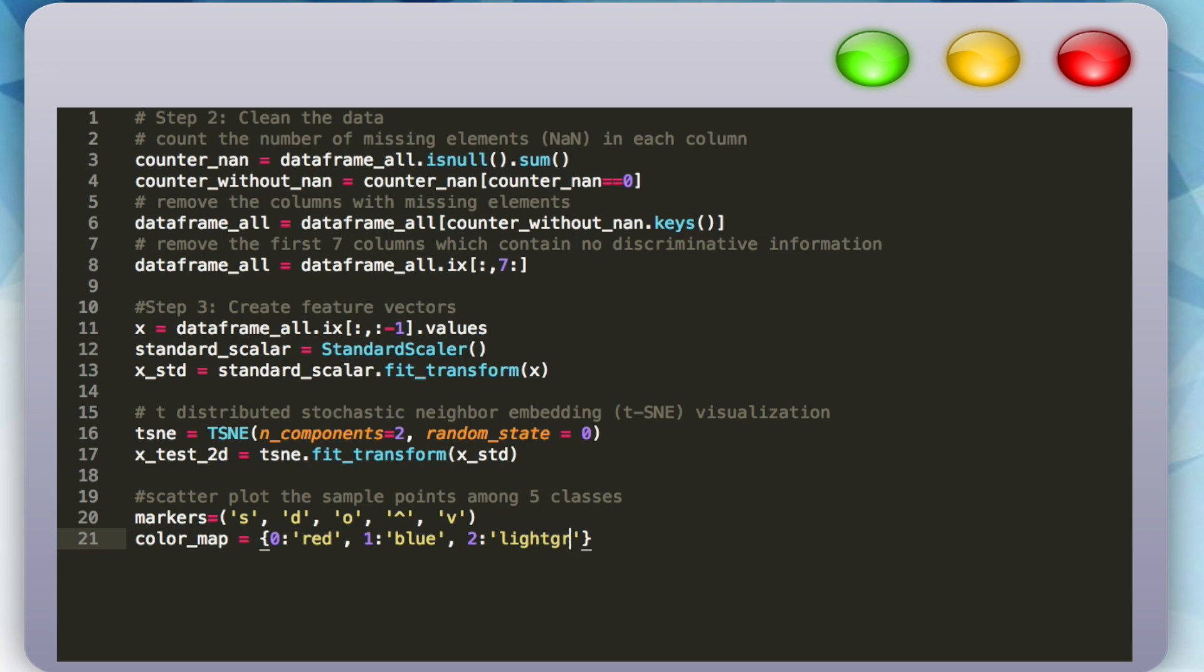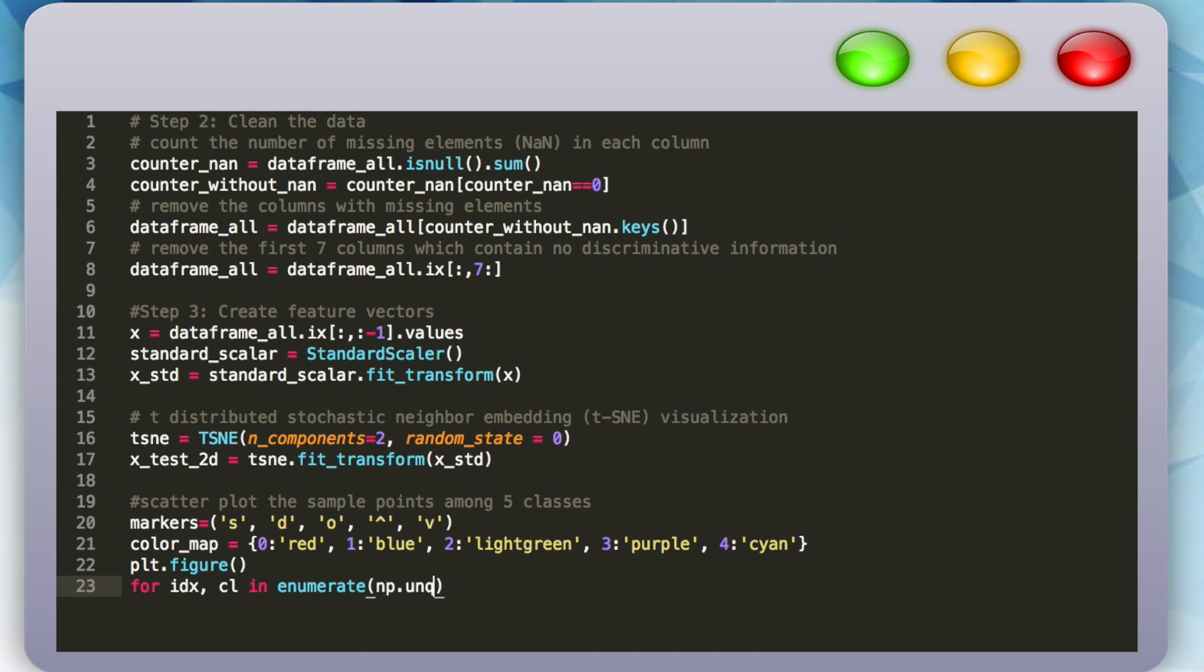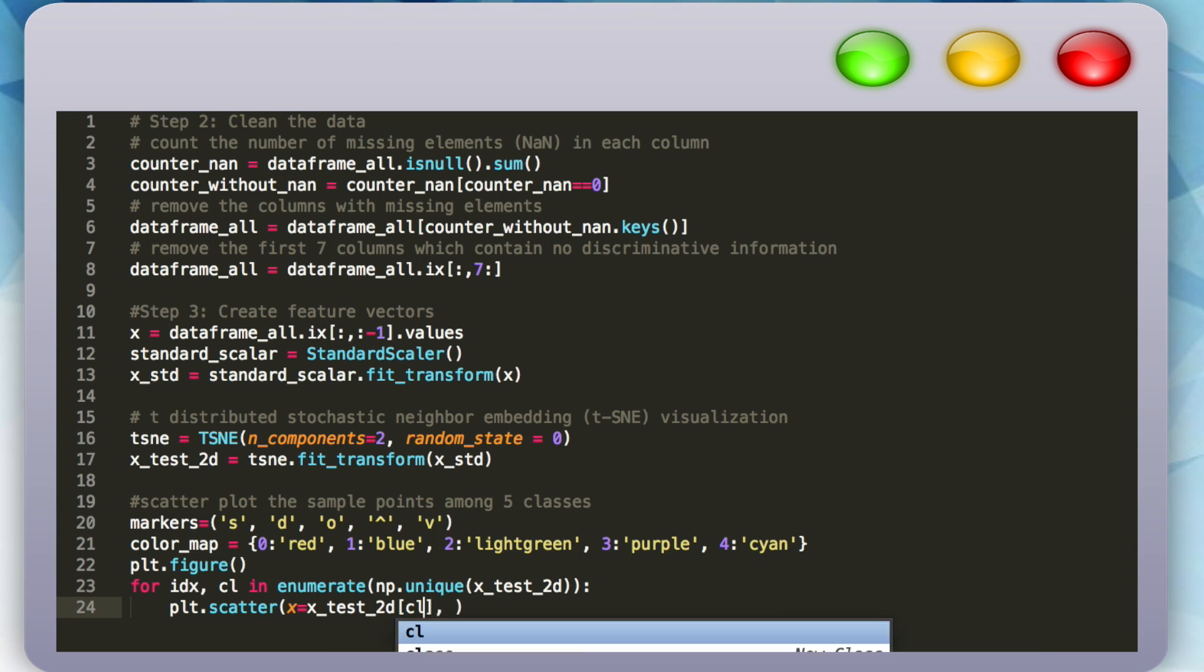Now that we have that, we can plot our points on a 2D graph by first creating a legend for our class labels, then plotting each point using matplotlib. We'll define the location of our legend and show our graph.